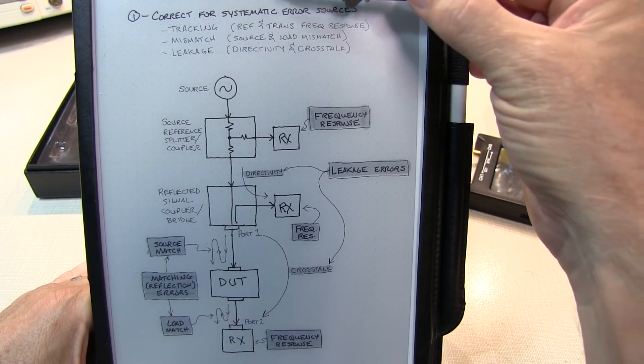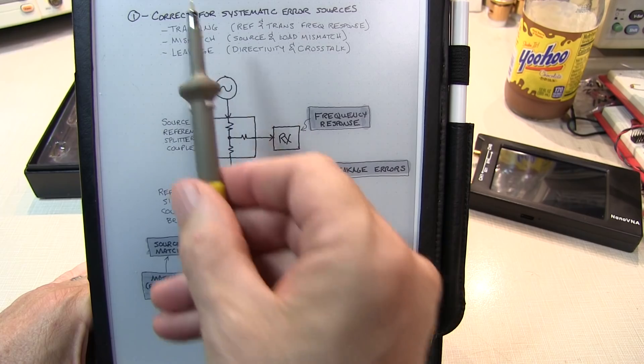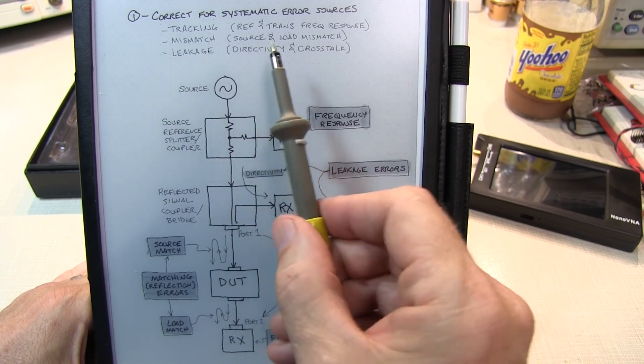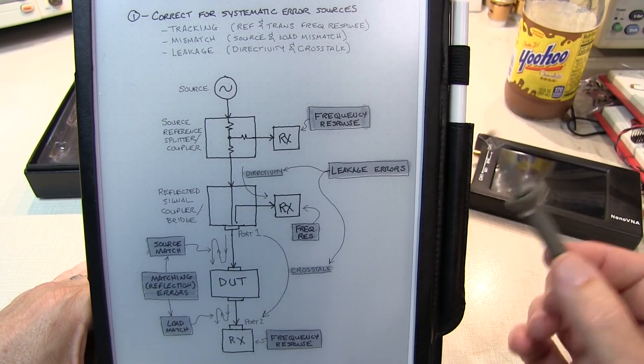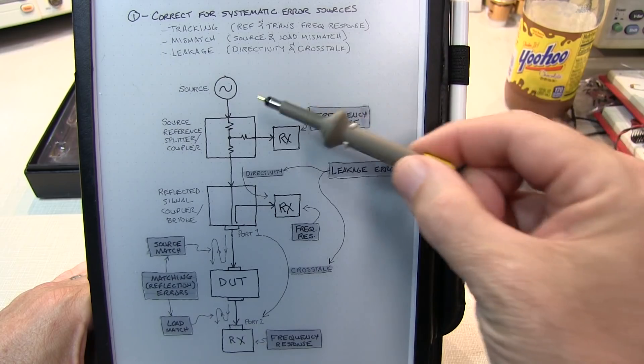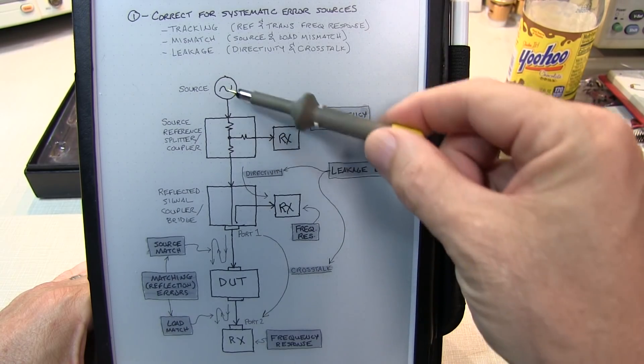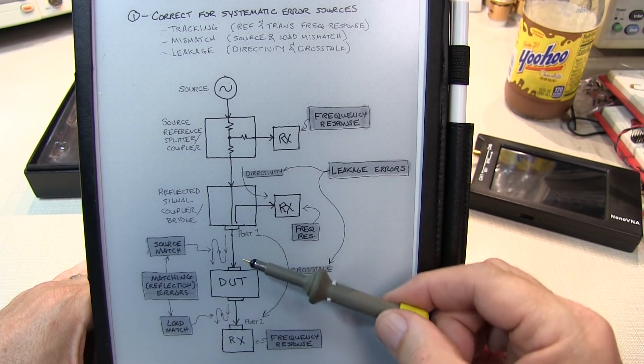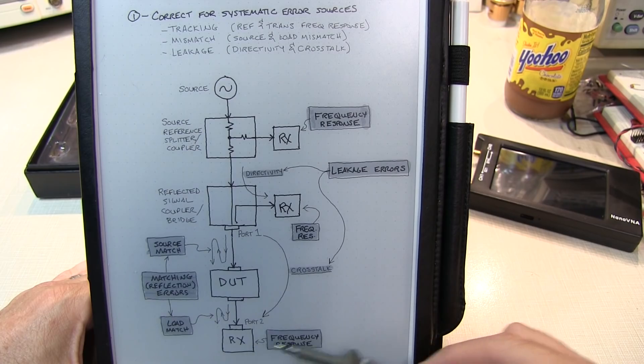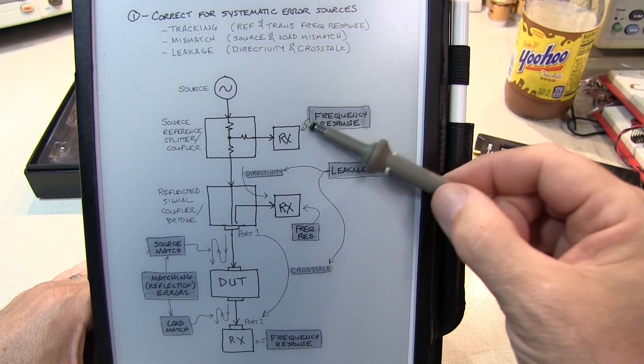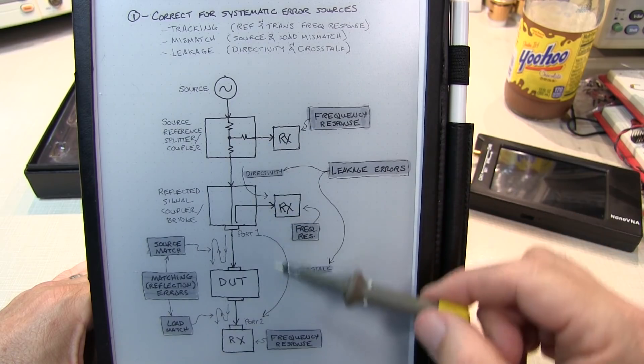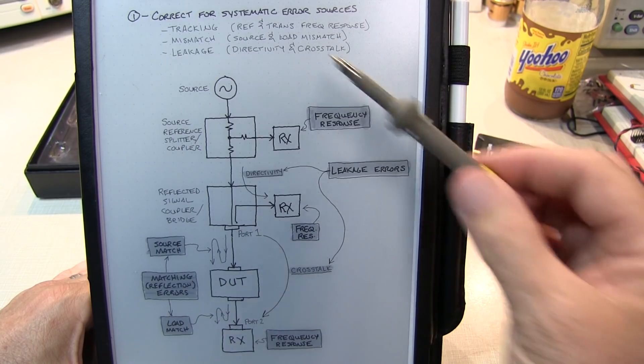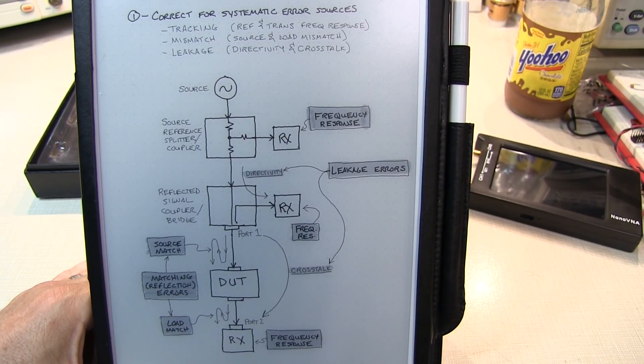What does a user calibration actually do? The first thing is it corrects for what are called systematic error sources. And these are things like what are called tracking errors, and this is a reflection and transmission frequency response. So on the VNA, remember that we've got a source that we're sampling internally, sending through a directional coupler to the device under test that's measuring the reflection coming back, and then we've got a receiver down below that's measuring the through response. So the frequency response of each of these power detectors and the coupler and things like that all have to be corrected for. And those are all part of what is called the tracking and frequency response errors.